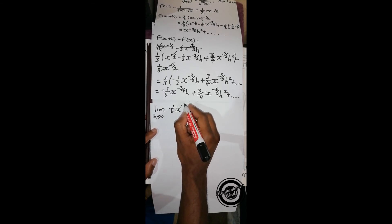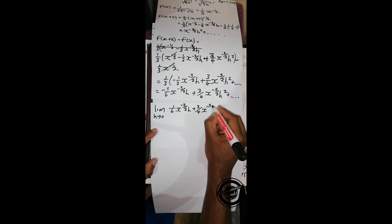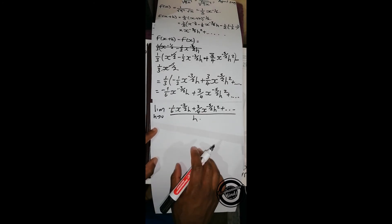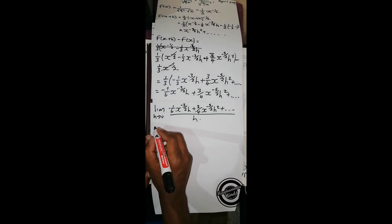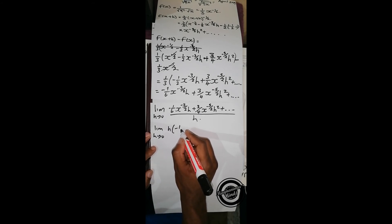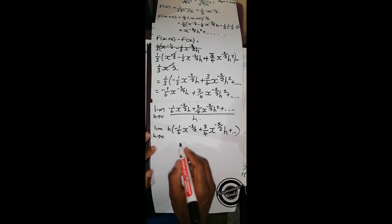We now plug this into the general formula. We have the limit h approaching zero of: negative one over six times x to the power negative three over two times h, plus three over four times x to the power negative five over two times h squared, plus higher order terms — all over h. We can see that there is an h on top and an h on the bottom, so we factor out h. After cancelling h and h, we proceed.